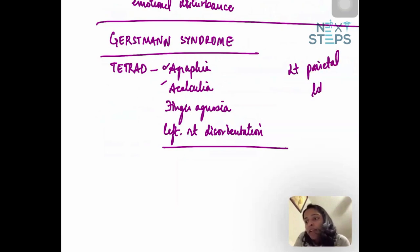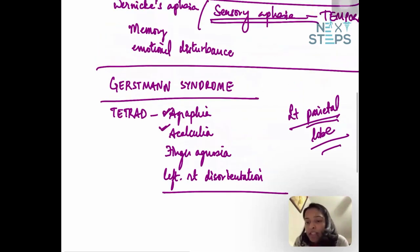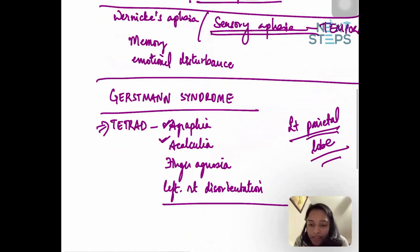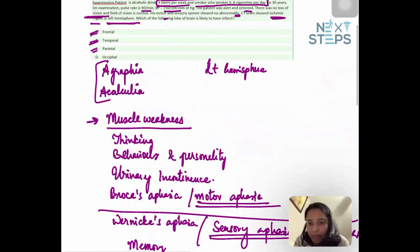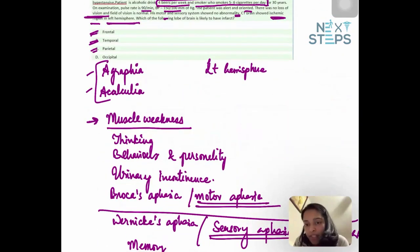Left parietal lobe infarcts - these tetrads are not seen in all patients who have an infarct in the left parietal lobe. Rather, one or two might be seen, or three might be seen. Very rarely the tetrad represents itself with all four symptoms. In our patient there is only agraphia and acalculia.